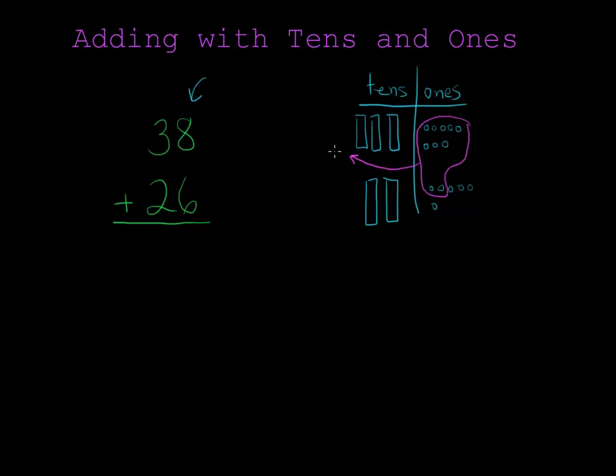Take the group of 10 and move it over to the tens column. And we can cross them out because they're not in the ones anymore. Let's show that 10 that we moved over and the 4 beans that were left. 8 plus 6 is 14 but we have to split it up because it's too big.